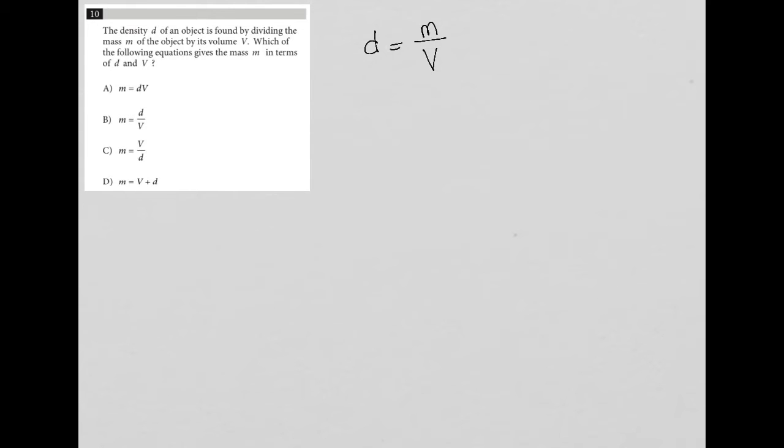Which of the following equations gives the mass M in terms of D and V? So anytime you see a question like this where it's asking for a single variable in terms of some other variables, all that means is that you want to isolate the first variable that's mentioned there.